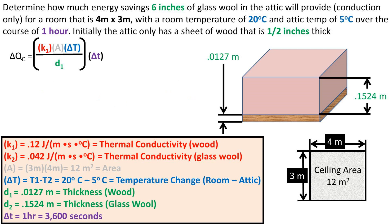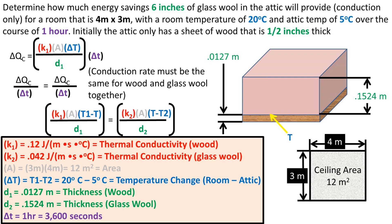For the next step, we need to find the energy loss due to conduction for both the wood and glass wool together. We will need to understand that the rate at which the heat loss from conduction must be the same for both the wood and the glass wool. This means we can set the equations for the wood and the equation for the glass wool equal to each other. And our delta T now is the room temperature minus the temperature in between the wood and glass wool, and the temperature between the wood and glass wool minus the temperature in the attic.